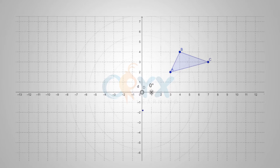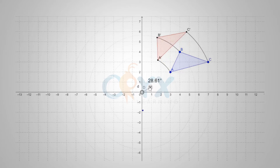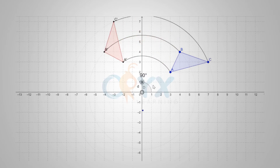We have triangle ABC with point A at (3,2), point B at (4,4), and point C at (7,3). If I rotate that figure 90 degrees counterclockwise, we get figure A prime, B prime, C prime. By rotating the figure 90 degrees counterclockwise, the rule is the point (x,y) becomes (-y,x). So point A was originally (3,2). If we switch the values of x and y and negate the y value, we get the point (-2,3) for A prime.